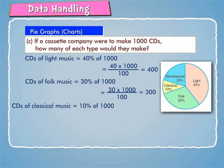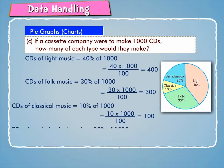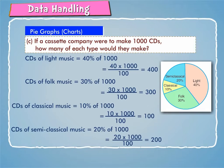CDs of classical music = 10% of 1000 = 10 × 1000 / 100 = 100. CDs of semi-classical music = 20% of 1000 = 20 × 1000 / 100 = 200.